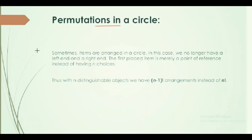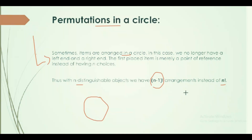Permutation without repetition uses the formula: choose R objects from N objects without repetition, where order matters. There is also permutation in a circle. Circular permutation formula is N minus 1 factorial. Any distinguishable objects arranged in a circle use N minus 1 factorial, because when items are arranged in a circle, we no longer have a left and right end. The first item is merely a point of reference instead of having any choice.